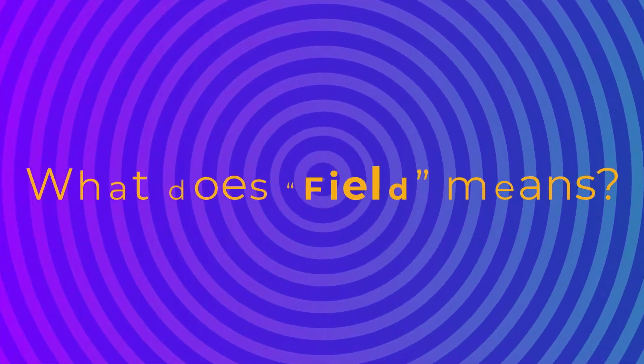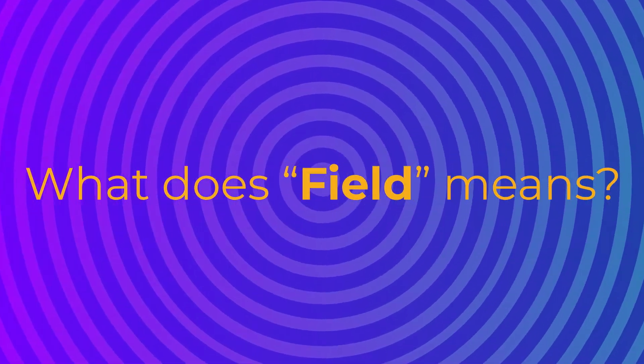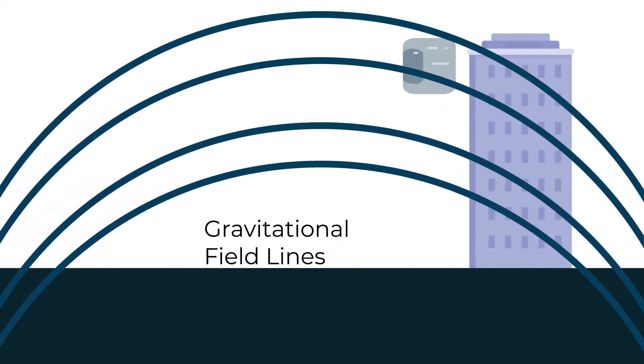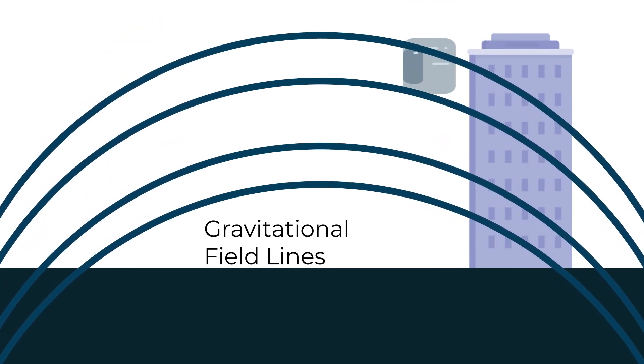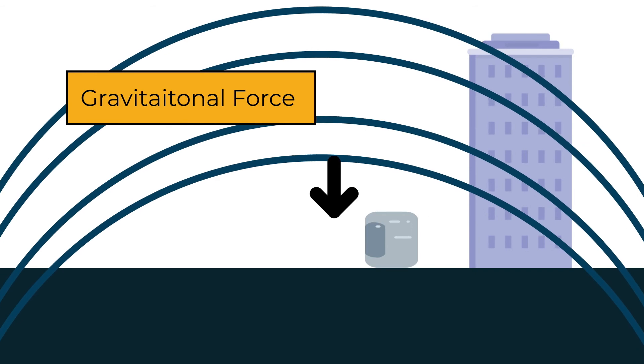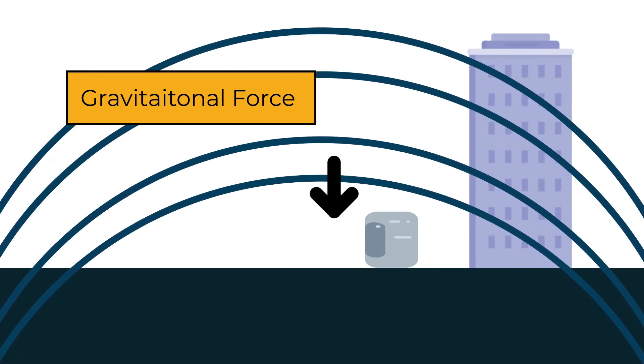Now let us understand what the word field means. When you release a stone from the top of a building, it automatically comes down. This happens because, almost everywhere, gravitational force fields are present. Whenever anything with mass comes into this field, it experiences a force.